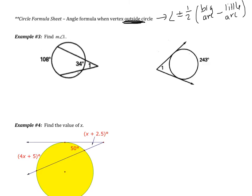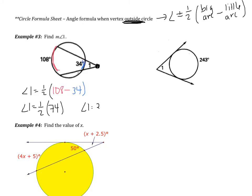Example 3 has two parts. In the first example, the vertex is outside the circle. Angle 1 equals one half of the big arc it intercepts minus the little arc, which is 34. That gives angle 1 equals one half of 74, so angle 1 equals 37 degrees.